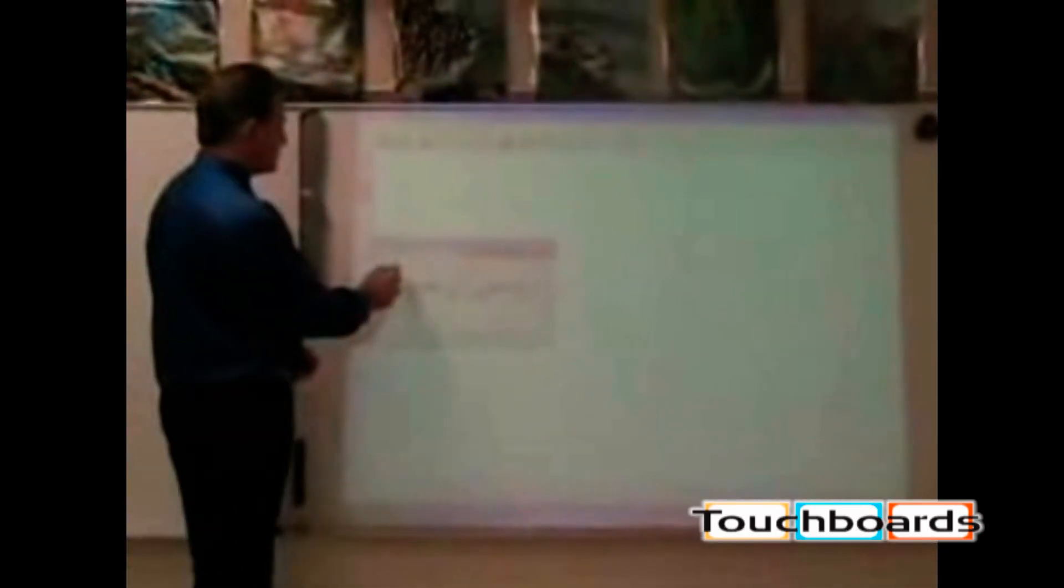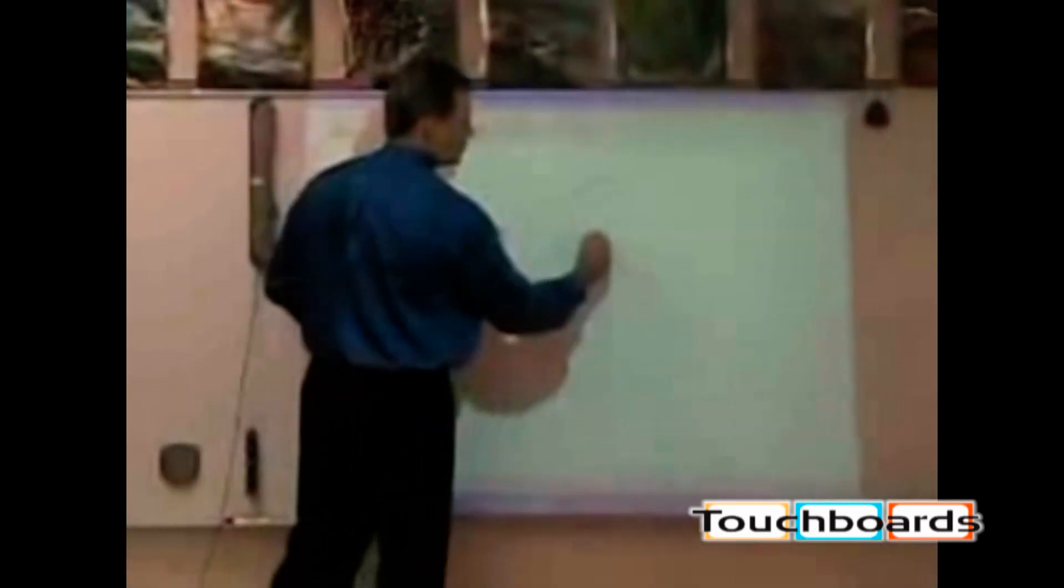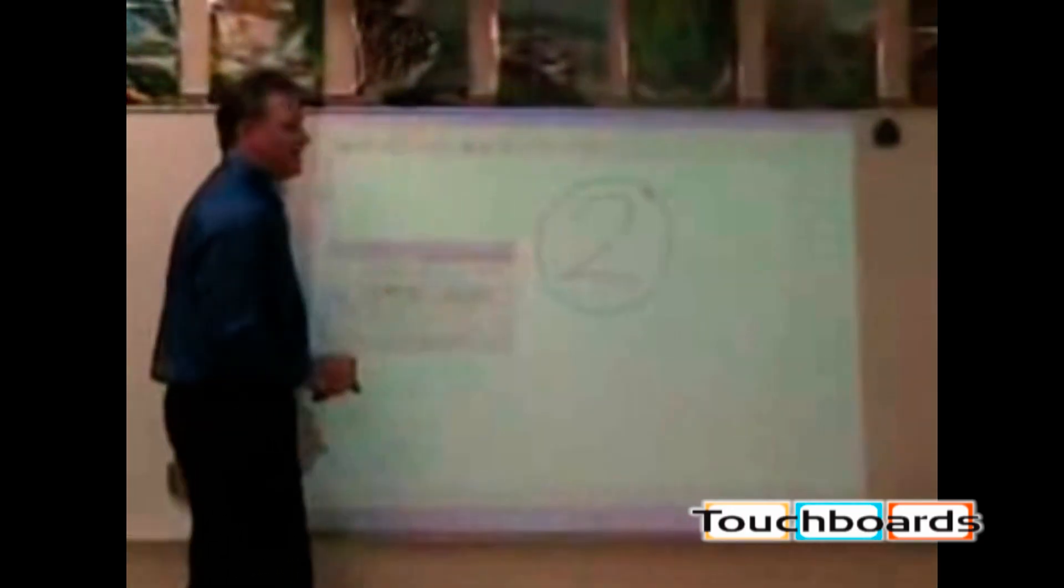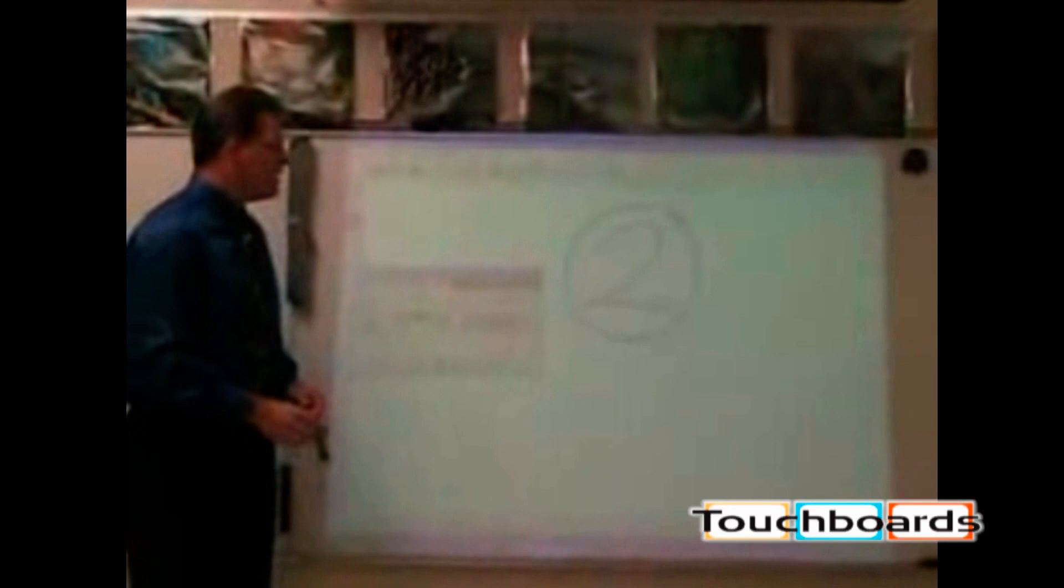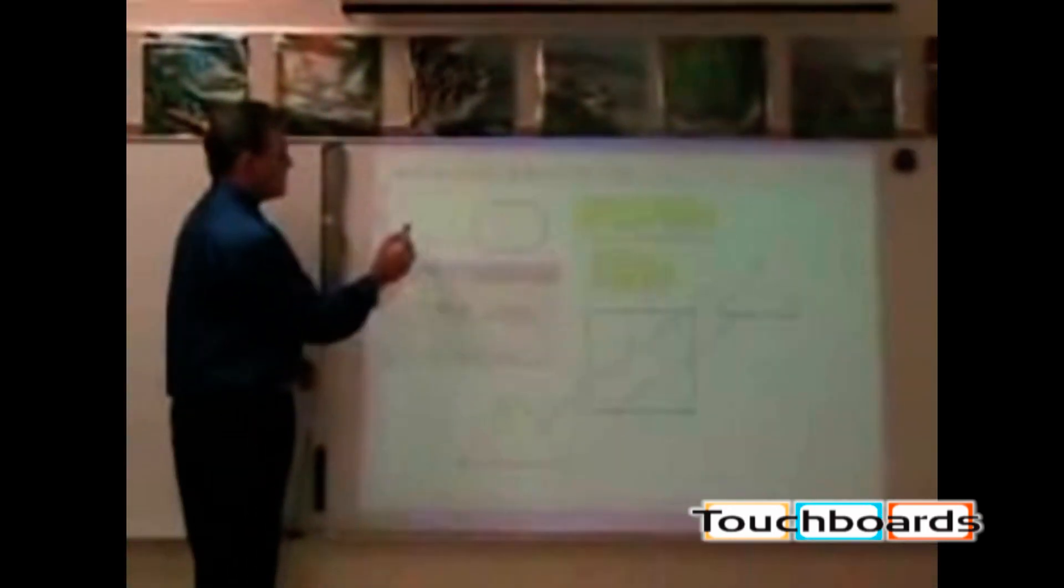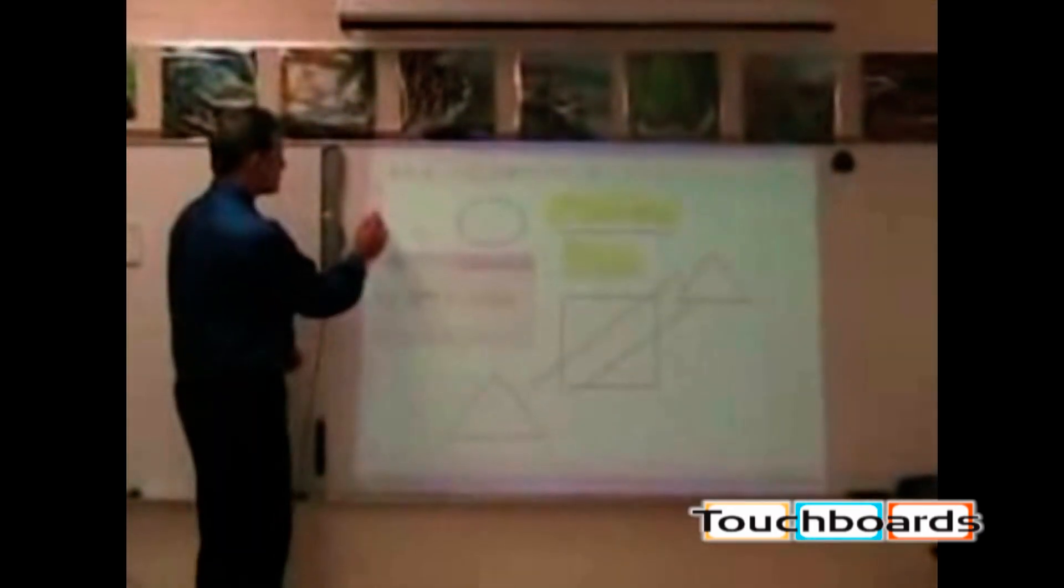You simply touch the new page button, all of the information disappears, and you're ready to continue working on your interactive whiteboard. Now it's not gone. Should you need to refer back to that information at any time, it's as easy as touching the thumbnails button, and now you'll see that I can access any of the boards that I've done thus far. We can then go right back to where we left off and pick up the lesson.